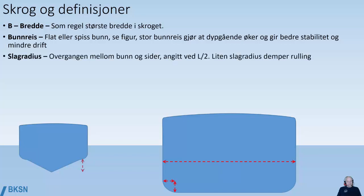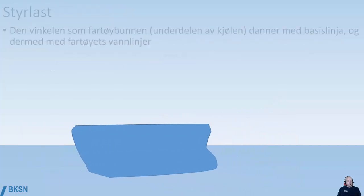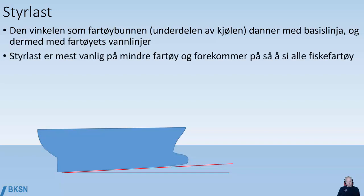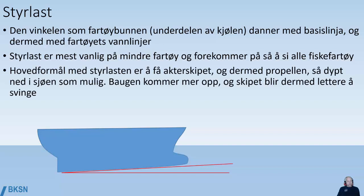Slag radius is the radius between the bottom and the ship's side, measured at midships — in the middle between the aft and the forward perpendicular. Bjelkebukt is the curving of the deck, as seen in the figure. Styrlast is the angle that the vessel's keel has with the baseline, and as such with the vessel's waterline. It means the vessel is designed with a bigger draft aft compared to forward. It is common on smaller vessels and very common on fishing vessels. One of the purposes of styrlast is to get the aft part of the ship and therefore the propeller as deep into the sea as possible, which also means the bow lifts more and makes the ship easier to turn.